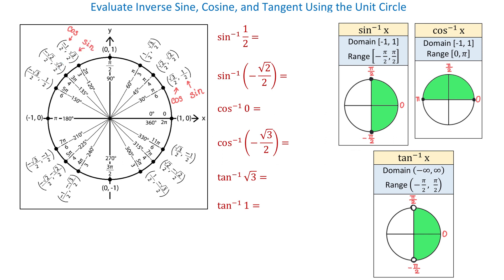For example, cosine of 2 pi over 3 is negative 1 half because this is the first coordinate of this point, and sine of 2 pi over 3 is square root of 3 over 2 because this is the second coordinate of this point. Now, what about the tangent function and how do we evaluate it using the unit circle? To find the value of tangent at a certain angle, we need to divide the y coordinate by the x coordinate. For example, tangent of pi over 4 equals 1 because square root of 2 over 2 divided by square root of 2 over 2 equals 1.